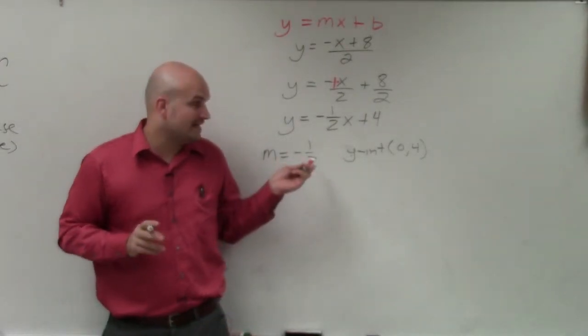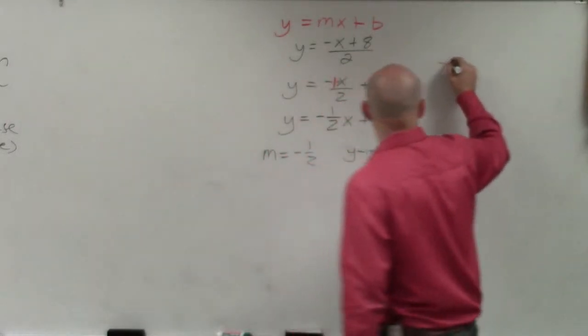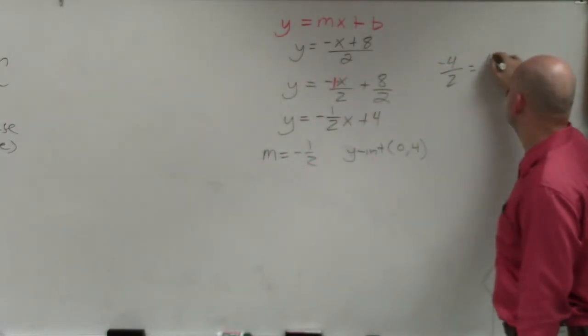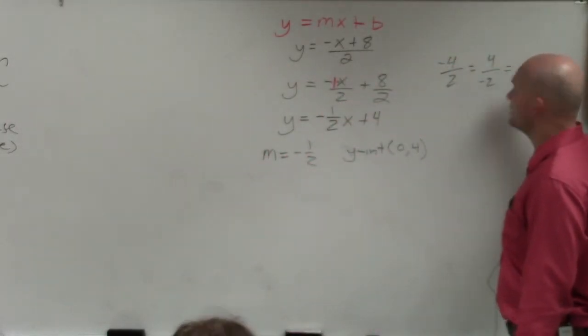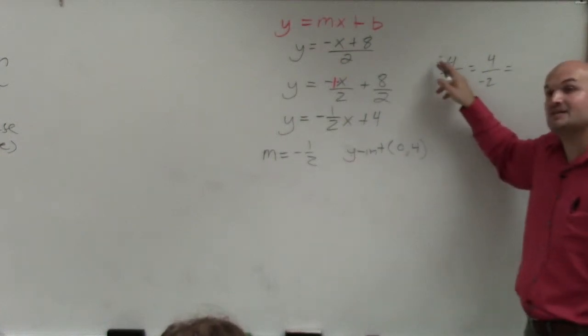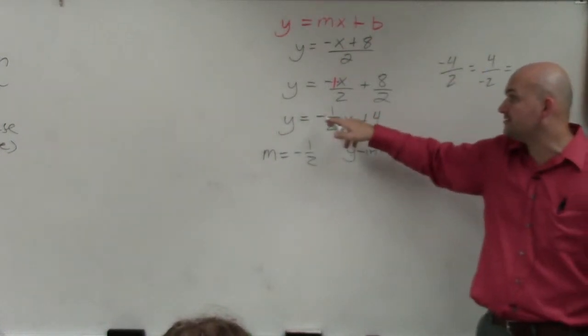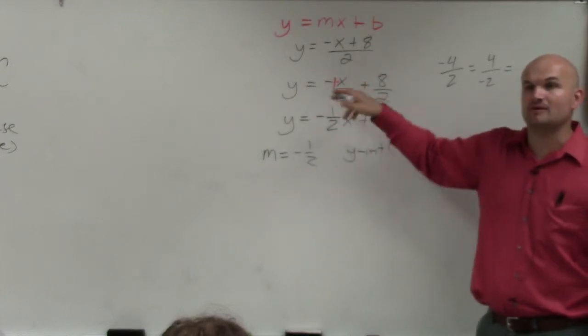The other thing to notice is whenever you have a negative slope, negative 4 divided by 2 is equivalent to 4 divided by negative 2. So it doesn't matter if the negative is in front or in the bottom. I write it in front, but the negative could go above or below.